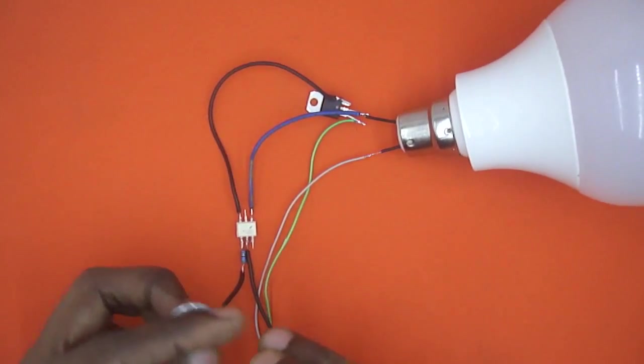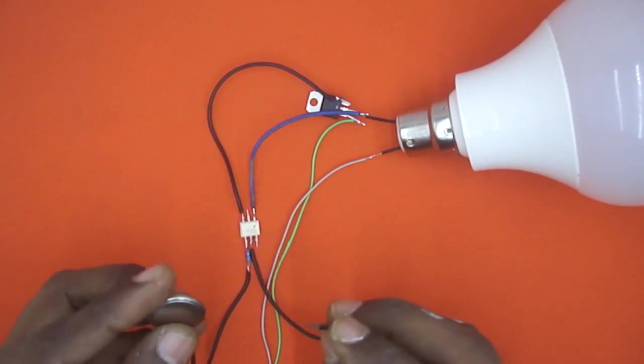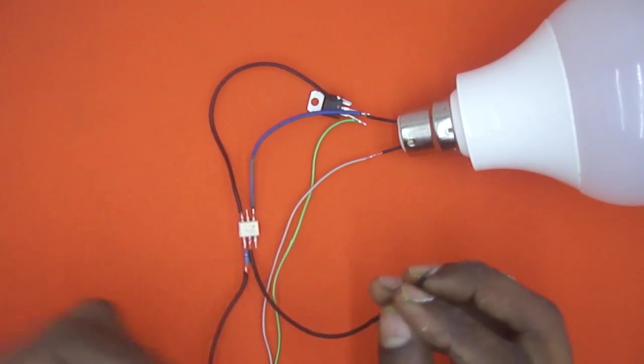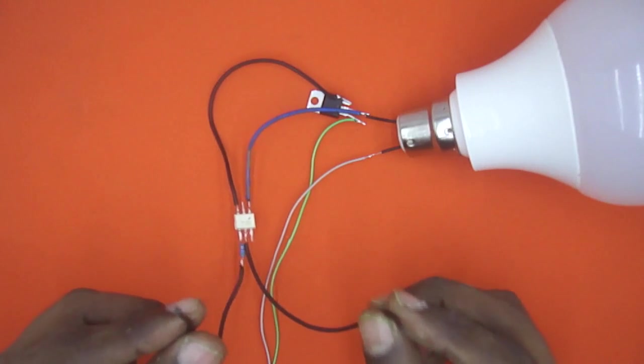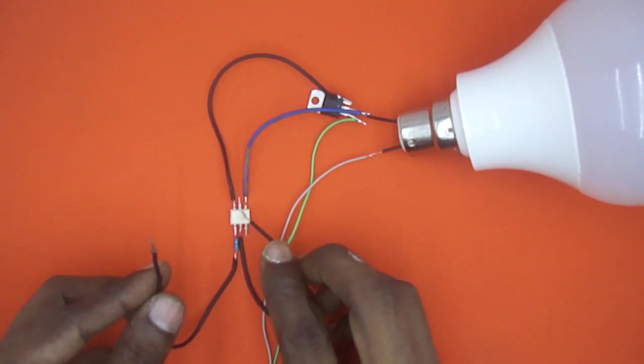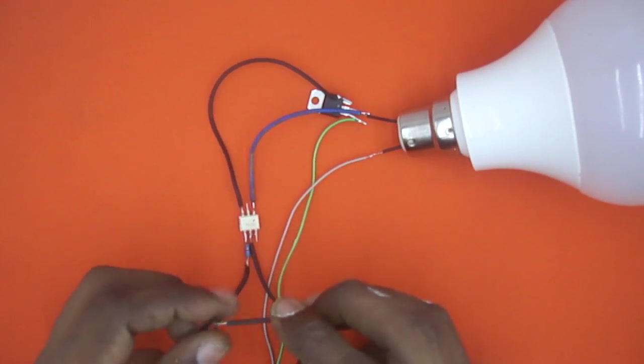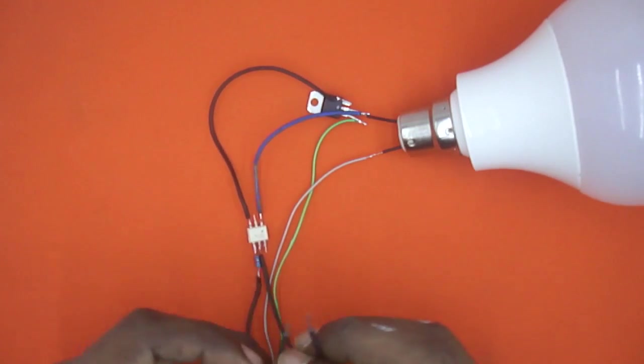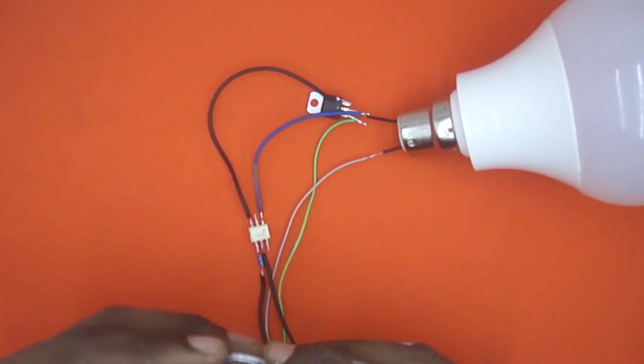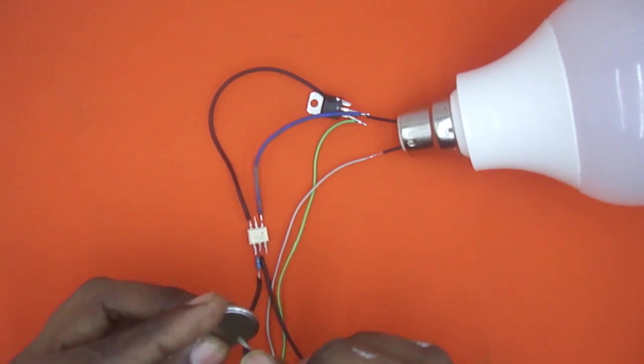If you want to operate this bulb through microcontroller you just need to connect these two wires to your microcontroller so that the LED inside this opto isolator should glow, and the bulb will get activated using triac. So let us run it once again.